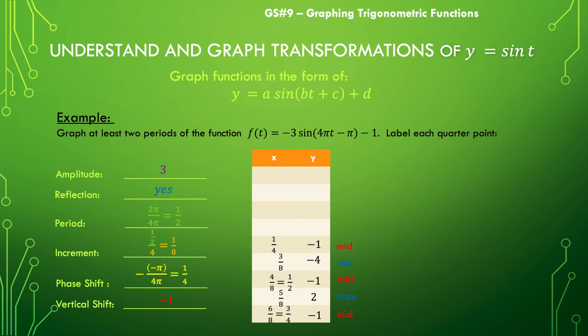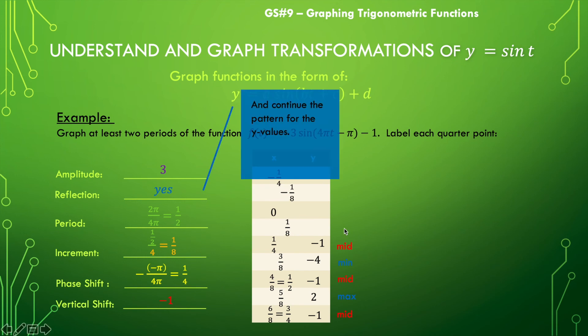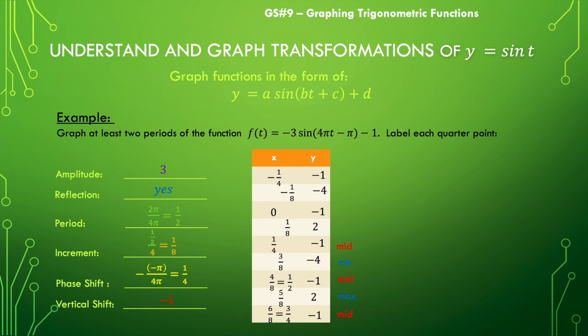Now we can continue our pattern backwards for another period. We take that one-fourth and subtract one-eighth, continuing that four times. So we go back to one-eighth, then zero, negative one-eighth, and negative one-fourth. We also continue our y pattern by adding a couple of negative ones, then the alternating negative 4 and positive 2.